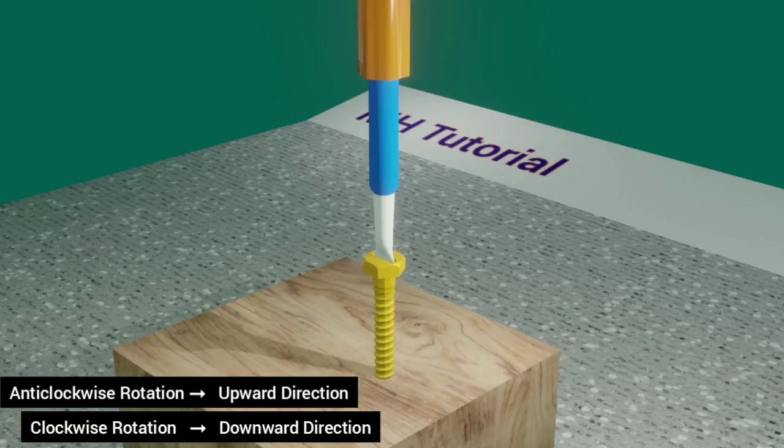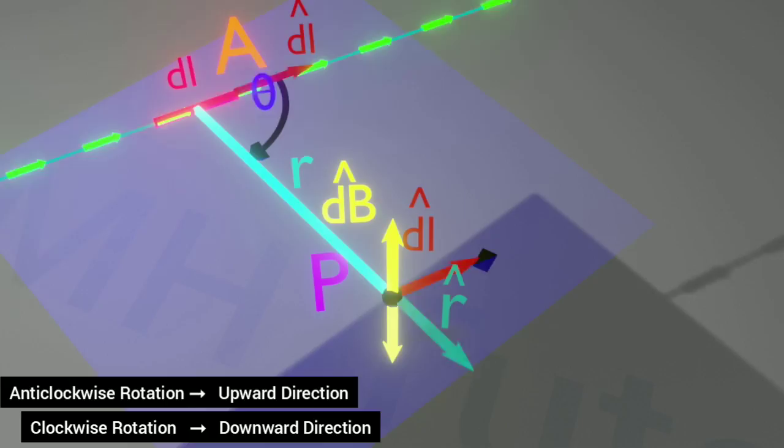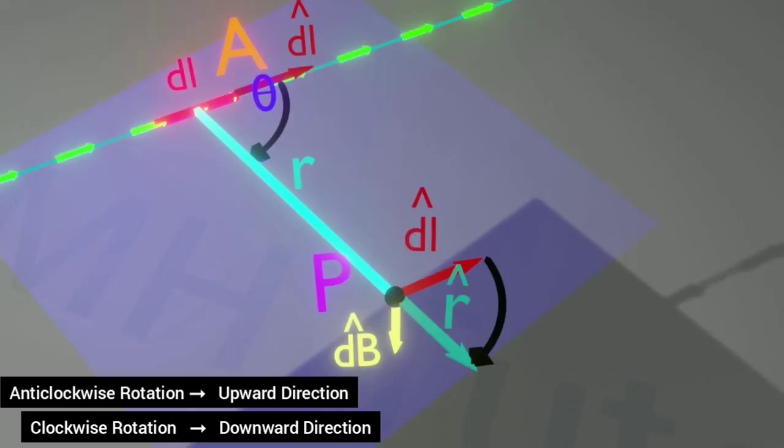In this cross product, we need to rotate from the first vector DL to the second one R. Of course, through the shorter angular path. And thus, we get its direction to be downward.